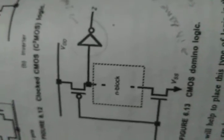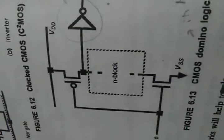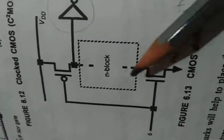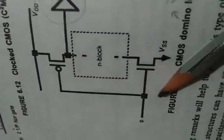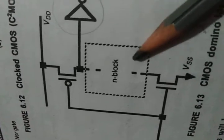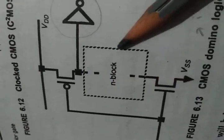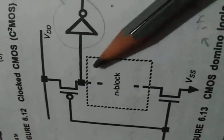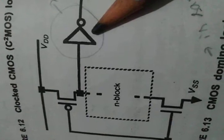The next is CMOS domino logic. The problem observed in dynamic logic is the cascading problem. This cascading problem can be overcome by using an inverter between each stage. This circuit is the same as dynamic CMOS logic, where both PMOS and NMOS are shorted together and given a single-phase clock. Here we are considering only the evaluation part, which is the N-block.